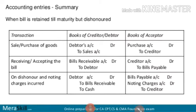Hello students, good morning. In Class 11 Commerce we are studying the chapter Bills of Exchange, and today I am going to discuss journal entries regarding dishonours — when the bill is retained till maturity but dishonoured. In the case of bills of exchange, when bill receivables are dishonoured at maturity, how will the entries be recorded?